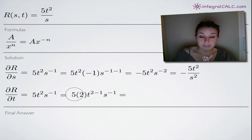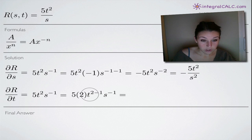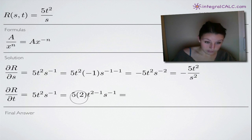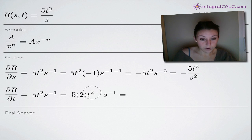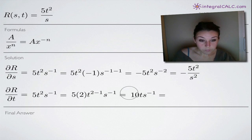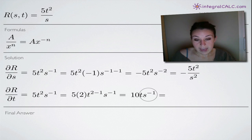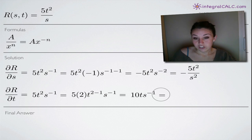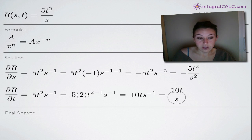We take the derivative of the variable t. Since we have t squared, we multiply that two out in front by the coefficient, and in the exponent on t we say two minus one, as with any normal derivative. That gives us 10t times s to the negative one. To finish the problem, we move s to the denominator, changing the negative one exponent to a positive one, and we end up with 10t over s.